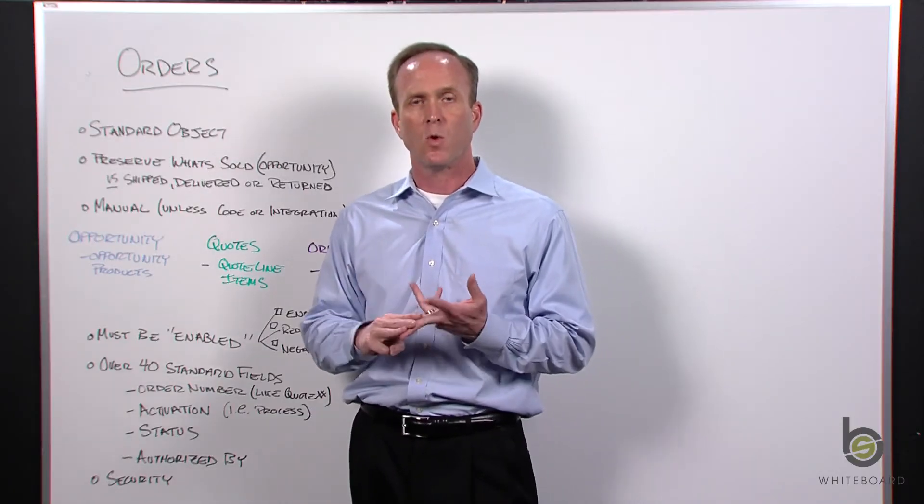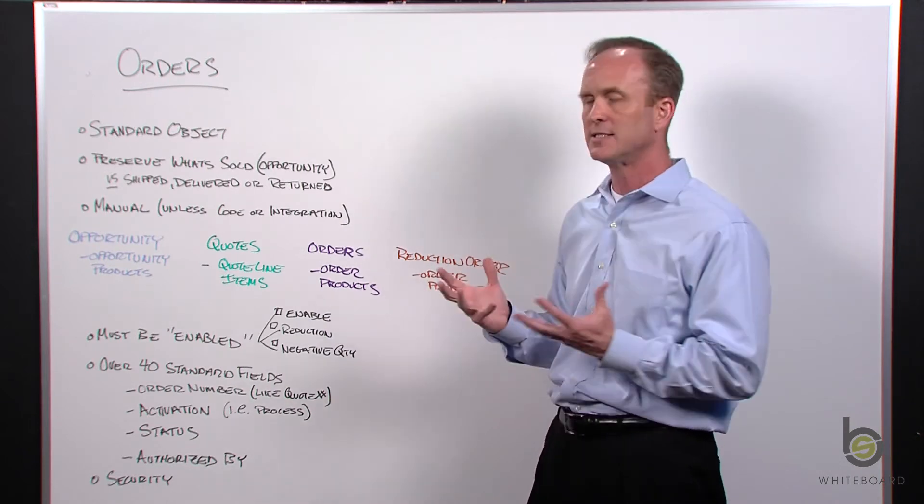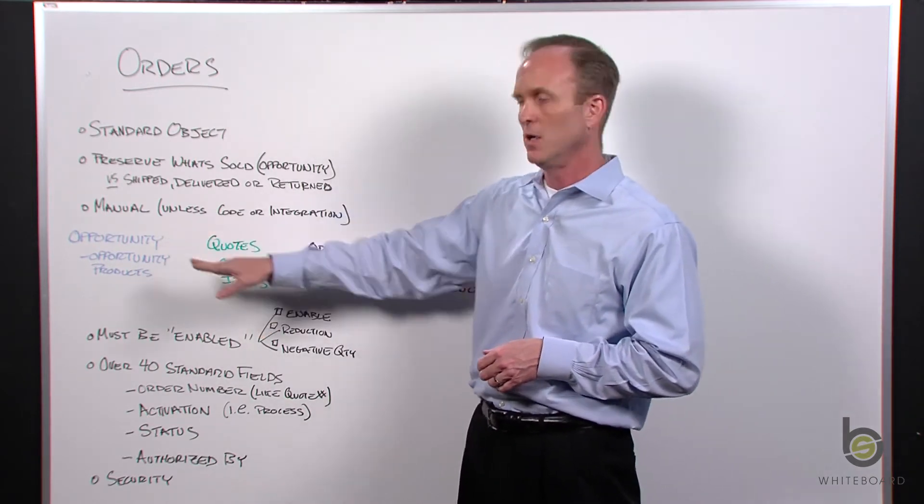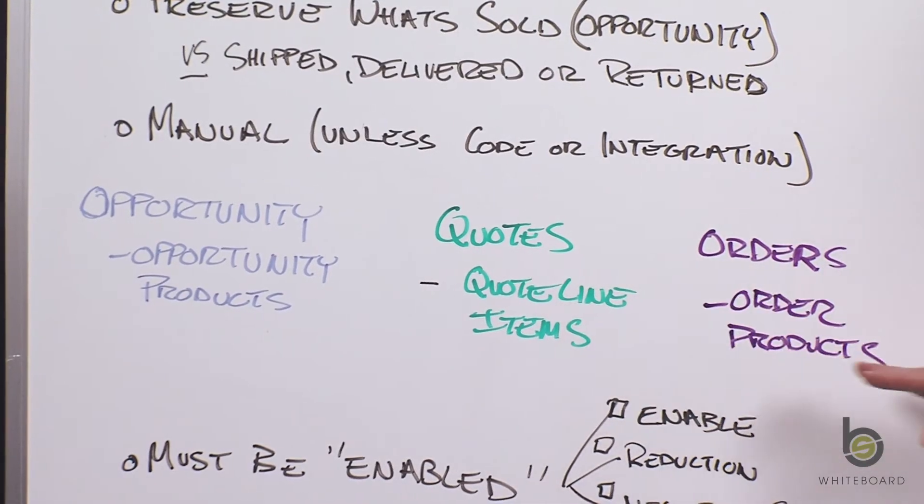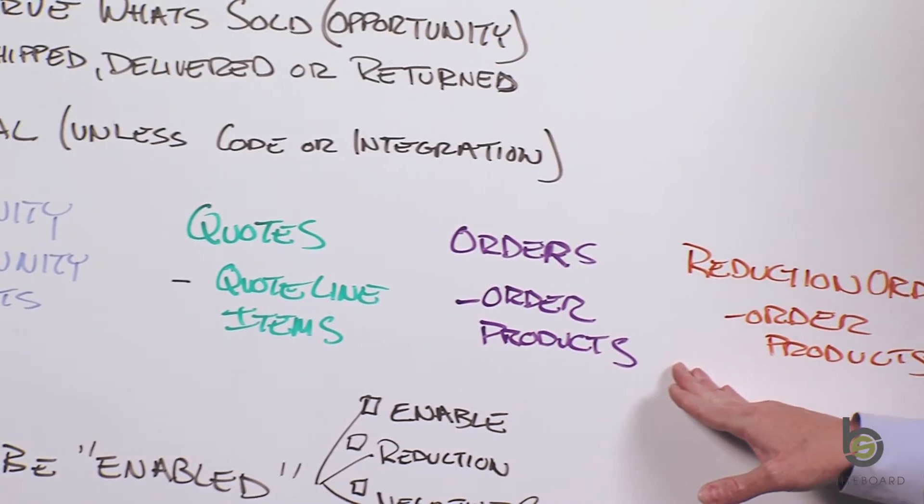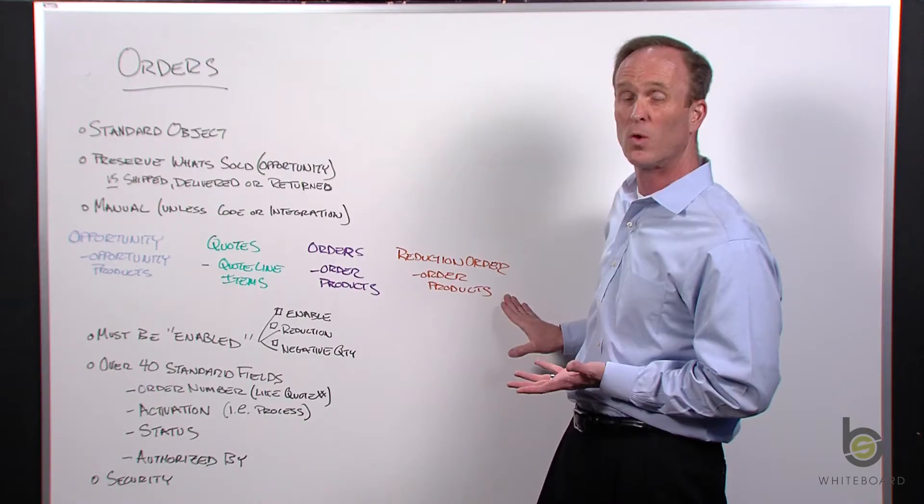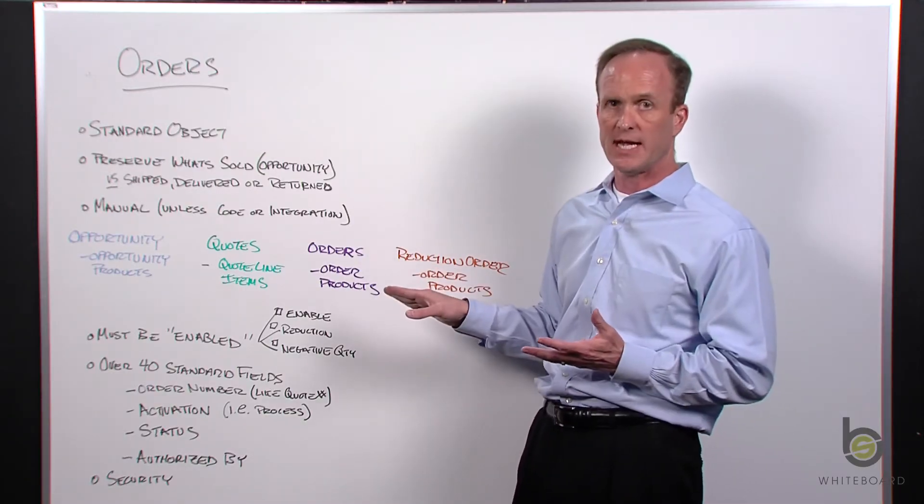Opportunities, quotes, orders, reduction orders are all very similar. The concepts are very similar. If you know how to add products to an opportunity, or put quote line items against a quote, you already know how to add products to an opportunity and even create a reduction order, which is really a negative order or return. You've already got those concepts down. It's essentially the same type of page layout, the same data structure.